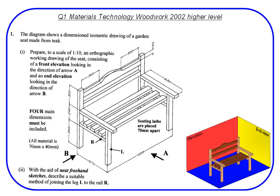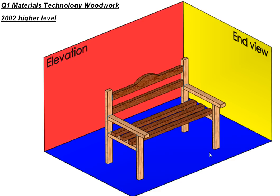We're going to work out where our views are going to go. Our main elevation is looking in the direction of arrow A and our end view is looking in the direction of arrow B. So if you could imagine holding a torch here and shining it in this direction, where is our shadow going to go? It is going to go on this plane here, which is our vertical plane.